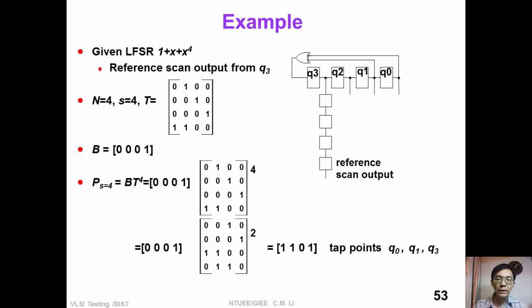Now let's see an example. Suppose we are given this LFSR, which can be represented by the characteristic polynomial 1 plus x plus x to the power of 4. And the reference scan output is coming out from Q3. So now we have this companion matrix T and we have this selection vector 0001, which selects output Q3.